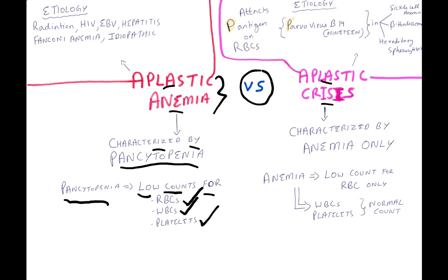The etiology of aplastic anemia includes radiation, HIV, Epstein-Barr virus, hepatitis, Fanconi anemia, or it can be idiopathic.